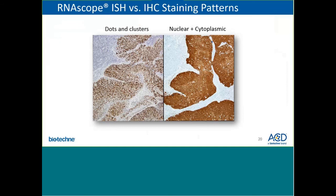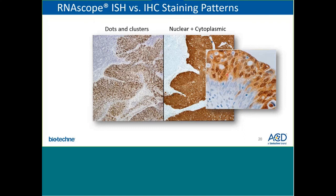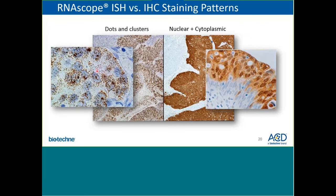Some of the common IHC staining patterns are shown in these images, including nuclear, cytoplasmic, membrane — for example the HER2 stain showing a membrane stain — nuclear and cytoplasmic as shown with P16, membrane and cytoplasmic, and other possibilities such as partial membrane staining, Golgi staining, peripheral nuclear staining, and really a wide variety of different IHC staining patterns. These images show the contrast in staining pattern between RNAscope and immunohistochemistry with P16 versus an HPV RNAscope assay. On the right with IHC for P16, you can see a diffuse nuclear and cytoplasmic stain. On the left in an HPV RNAscope assay, you can see the characteristic punctate dots and clusters in both nuclear and cytoplasmic compartments of this squamous cell carcinoma.